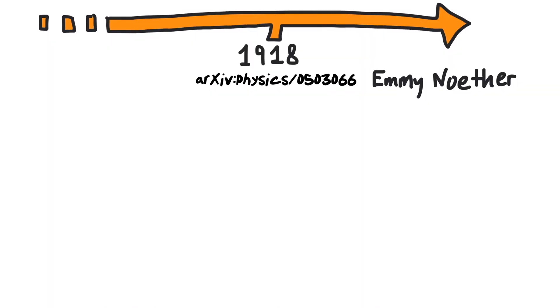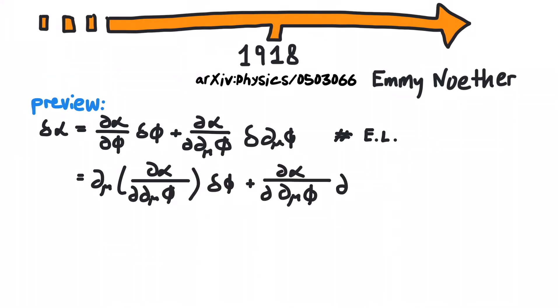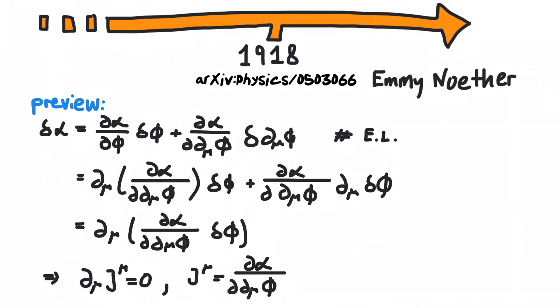As Emmy Noether proved a hundred years ago, every differentiable transformation that changes the Lagrangian merely by a total derivative results in a conserved current.